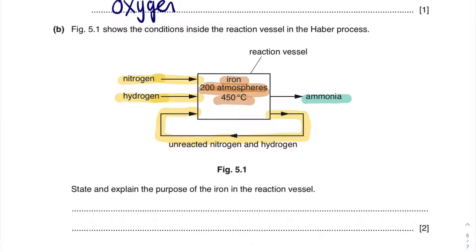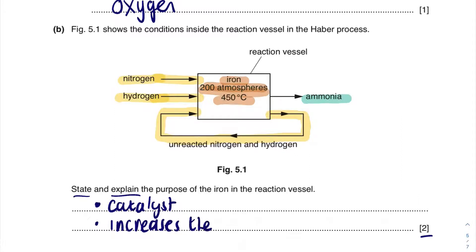The question asks us to state and explain the purpose of iron in the reaction vessel. There are two command words there. First we need to state the purpose for two marks: the purpose is that iron is there as a catalyst. Now we need to explain what catalysts do: iron is a catalyst and it increases the rate of reaction. Notice how I've written in bullet points — that's perfectly acceptable in the exam. I've stated and I've explained the purpose. Two marks.